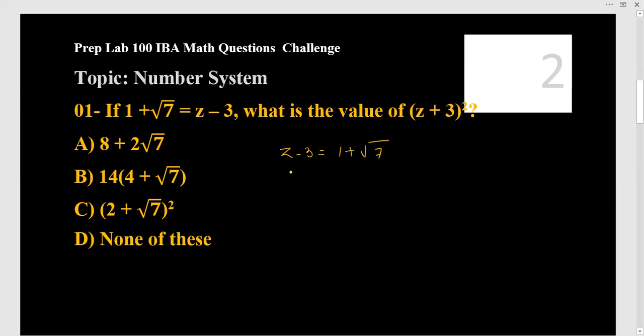So we can find the value of z over there. z is equal to... so that will be 1 + √7, and then -3 will shift as positive. So z will be equal to 4 + √7. Now what they're asking, IBA is asking you to find the value of (z + 3)². So you don't have to open (z + 3)² and then put the value. You have to make it very easier.